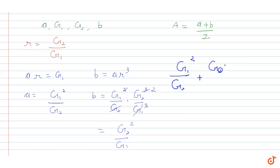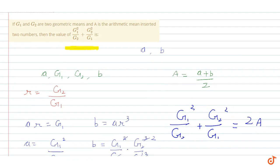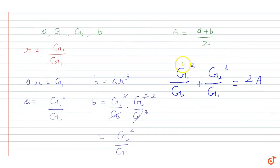It is g2 square by g1. So the value is 2 times A equals g1 square by g2 plus g2 square by g1, and the value is equal to 2 times A. So the answer for this question is 2 times A.